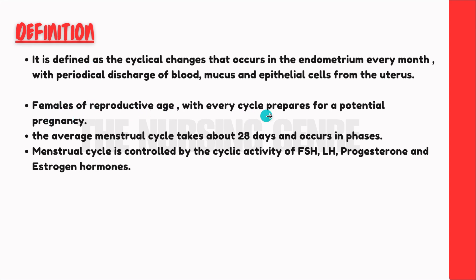Females of reproductive age, with every cycle, prepare for a potential pregnancy. Every month, women prepare their uterus. But if the egg and sperm do not meet, the endometrium will shed. The average menstrual cycle takes about 28 days and occurs in phases. The menstrual cycle is controlled by the cyclical activity of follicle-stimulating hormone, luteinizing hormone, progesterone, and estrogen hormones.